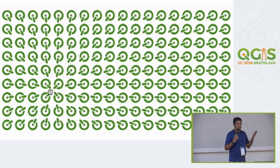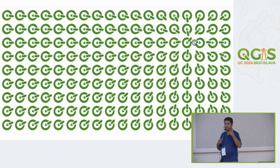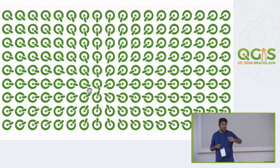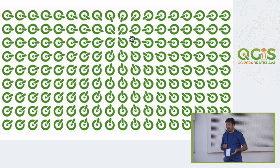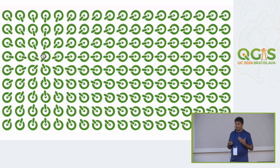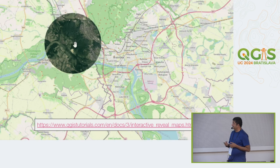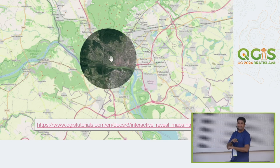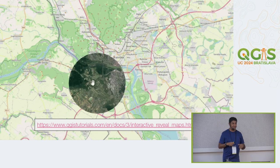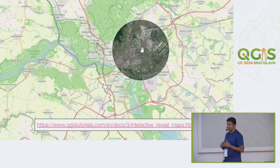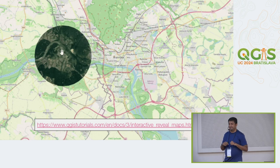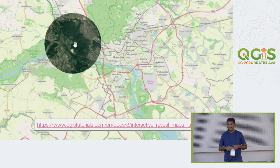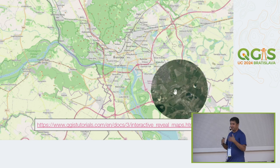This is fun, but it opens up a whole lot of possibilities. Many users may not realize they have access to the canvas as a variable and can control it through expressions — zooming to certain areas or changing the color of a feature as you hover over it. A recent example: you can create reveal maps where you have two layers, and as you move your cursor, it reveals what's underneath the current layer — done with the same @canvas_cursor_point and layer rendering modes to mask the region.